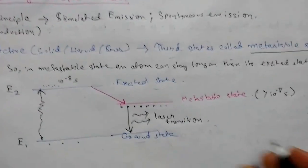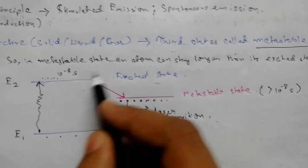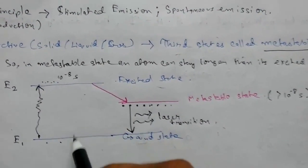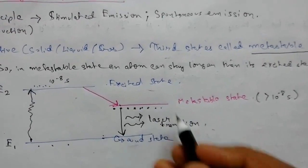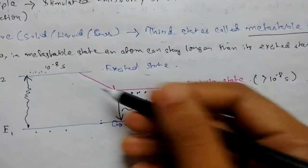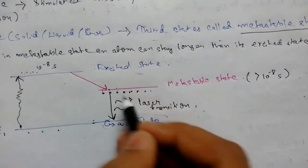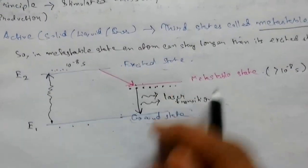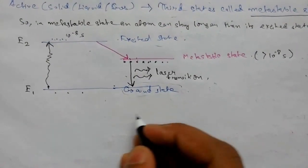Population inversion is an artificial, man-made situation that is established by generating a large number of atoms in the higher state than the lower state. The process of doing this is known as pumping — pumping atoms from the lower state to the higher state. The whole process is known as population inversion.